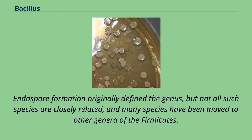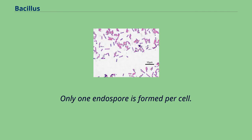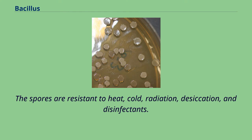Endospore formation originally defined the genus, but not all such species are closely related, and many species have been moved to other genera of the Firmicutes. Only one endospore is formed per cell. The spores are resistant to heat, cold, radiation, desiccation, and disinfectants.